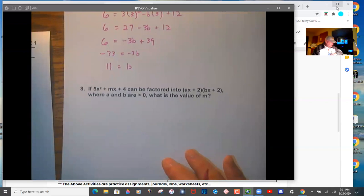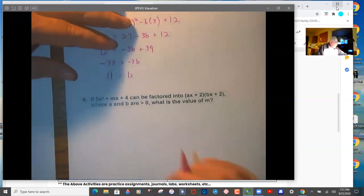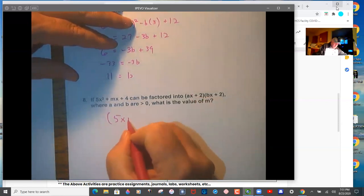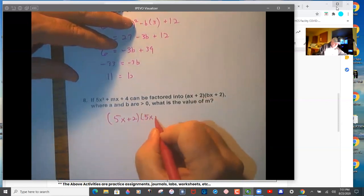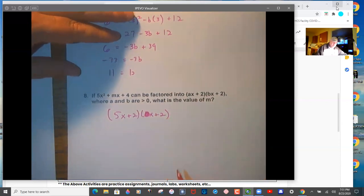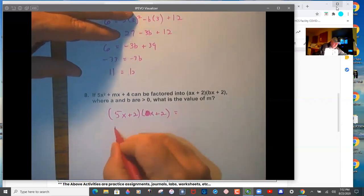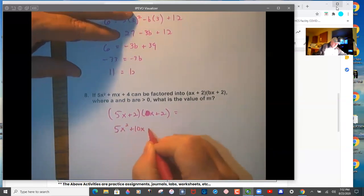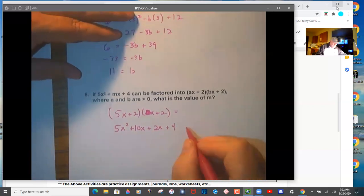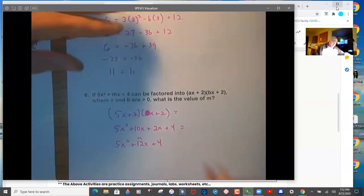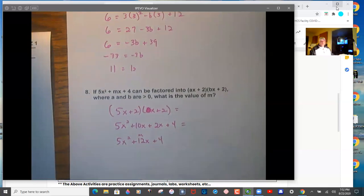And then on eight, it is a FOIL process game. So it's factored like this, meaning that this has to be five and one. That's the only way it can be. So you have to FOIL it out. Five x plus two times x plus two. FOIL it out. So 5x squared plus 10x plus 2x plus 4. So 5x squared plus 12x plus 4. So m is 12. And that's practice quiz one.